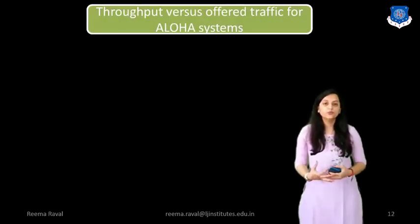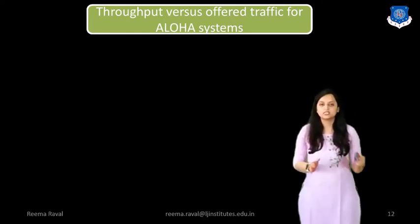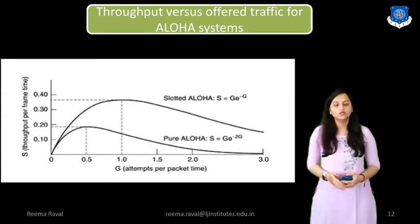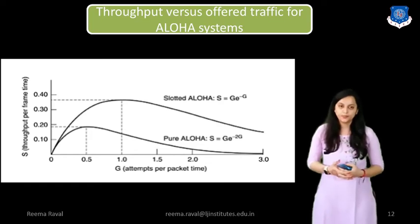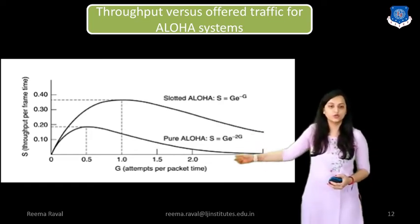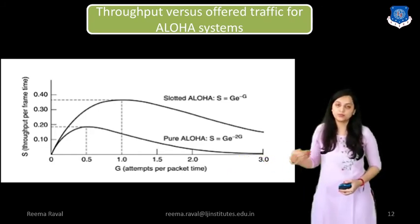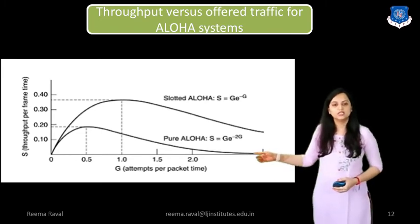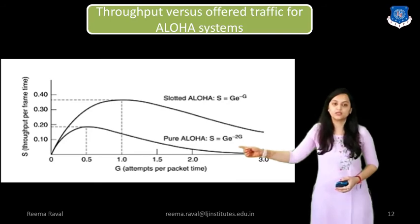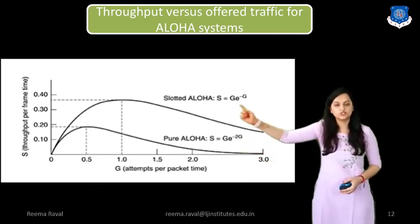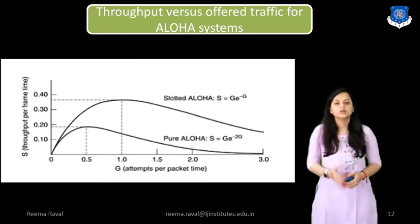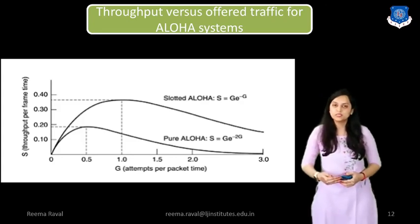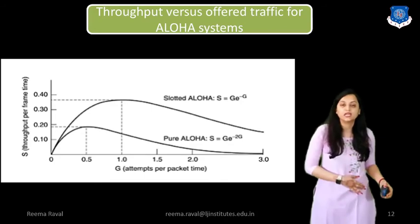Now let us see the throughput versus offered traffic for these ALOHA systems. In this diagram, the graph is shown for Pure and Slotted ALOHA where throughput versus attempts per packet time is plotted. The X axis represents G (attempts per packet time) and the Y axis represents S (throughput per frame time). For Pure ALOHA, the peak occurs at G = 0.5 with throughput formula S = G × e^(−2G), and for Slotted ALOHA, the formula is S = G × e^(−G), with peak at G = 1. The efficiency is 18.4% for Pure ALOHA and 36.8% for Slotted ALOHA.